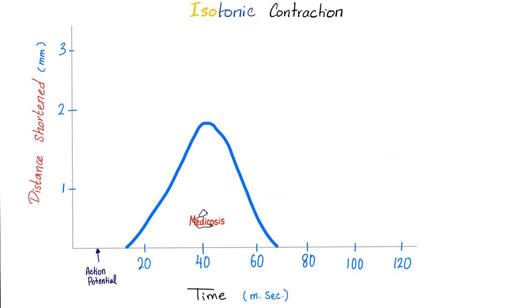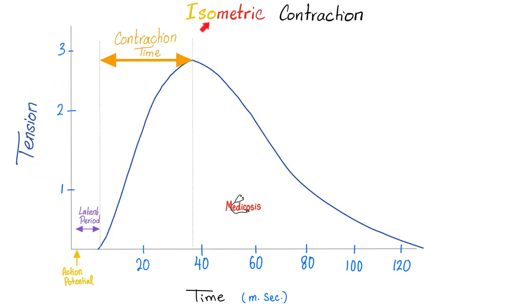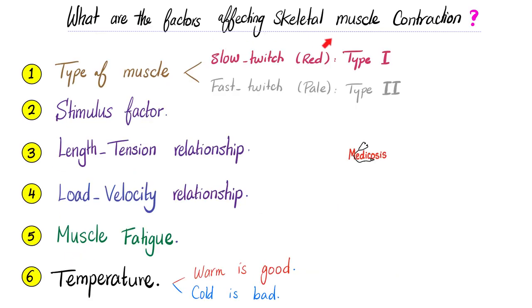In isotonic contraction, the tone does not change but the muscle shortens, so you can calculate the distance shortened. In isometric contraction, the length does not change — what changes is the tension, so you can plot tension against time.